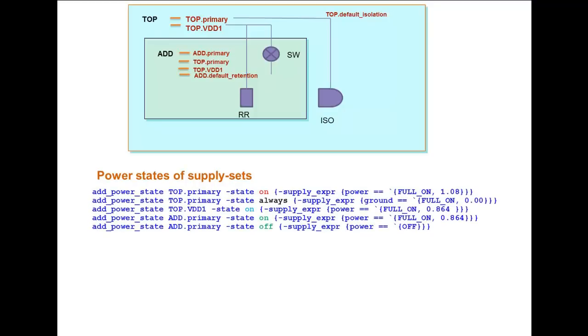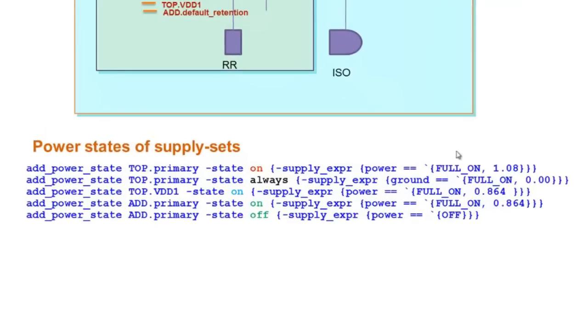Here we can see that the AddPowerState for Top.Primary has a state named On for function Power with the voltage 1.08 and Top.Primary Ground has a state named Always operating at 0.0.